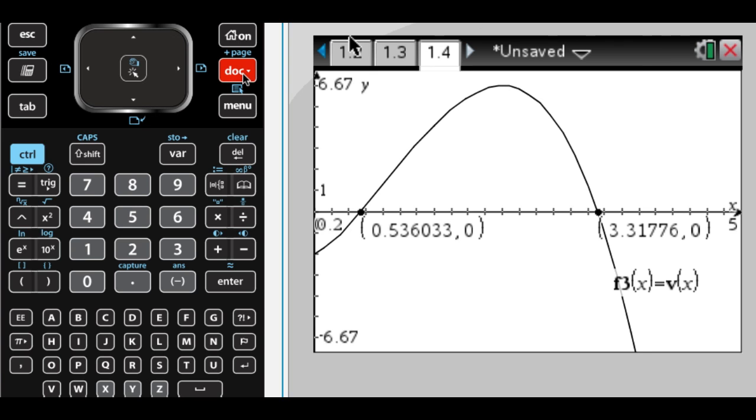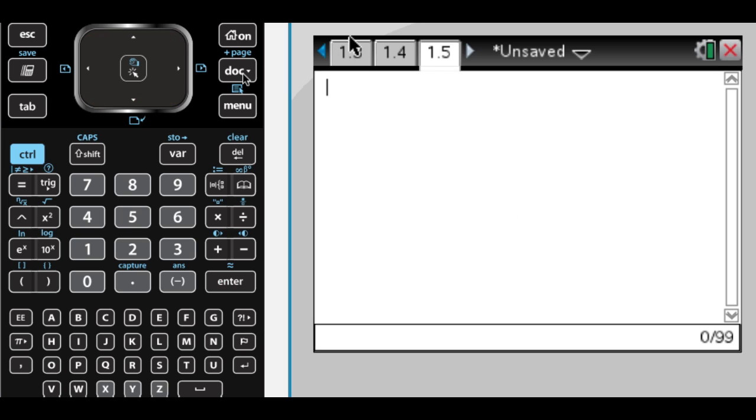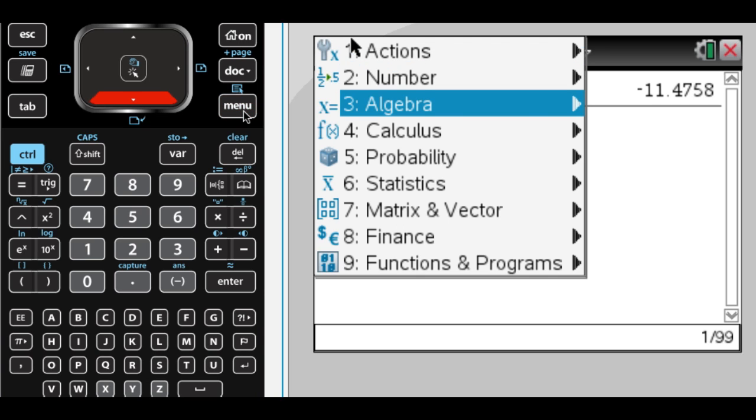And then part D says, is the speed of the particle increasing or decreasing at t equals 4? So I need to know v of 4, and v of 4 is negative. And then I also need to know v prime of 4. So v prime of 4 is a of 4, so acceleration.